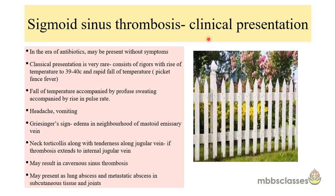Nowadays most sigmoid sinus thrombosis remains silent because of antibiotic use. In a typical case, we get a fever of the picket fence type — a steep sudden rise of temperature up to 39–40 degrees Celsius along with rigors, followed by rapid fall of temperature always accompanied by profuse sweating. Moreover, headache and vomiting are present in cases of sigmoid sinus thrombosis.